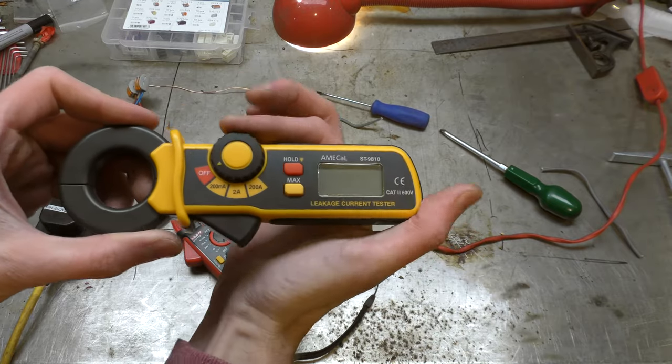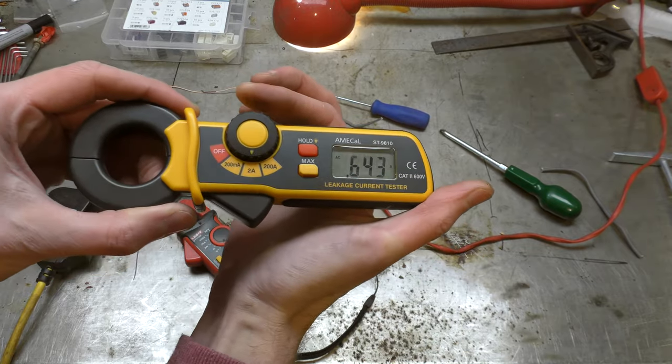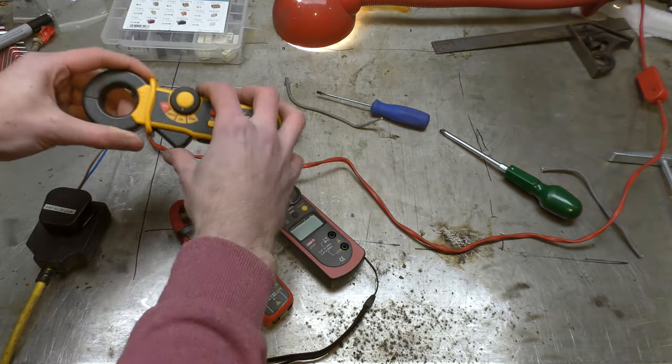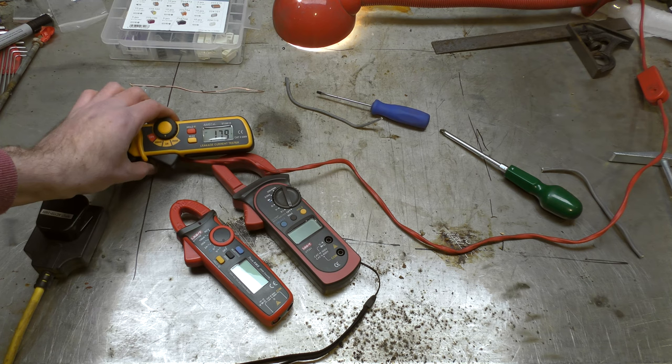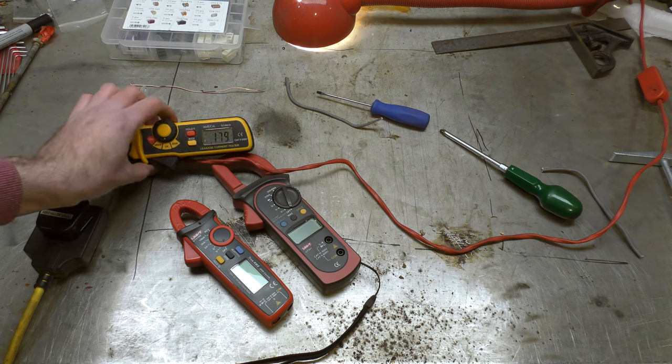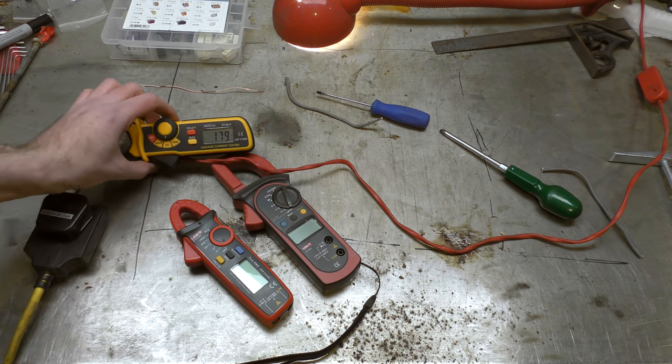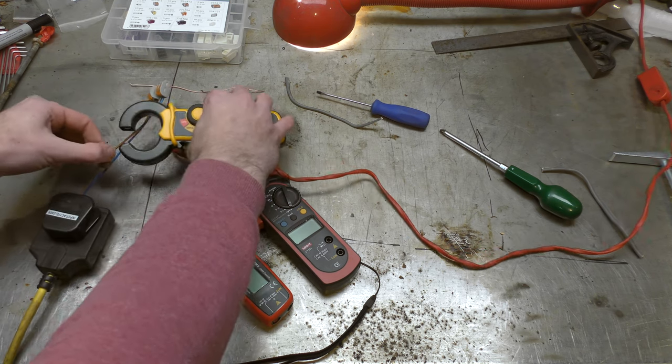We'll set the Amical one to go for two amps. What does that get us? 179 milliamps. Okay, 179.